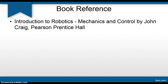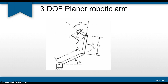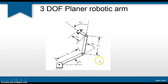Our reference book will be Introduction to Robotics by John Craig. In this session we will solve a particular example where we have a three degree of freedom robot which is moving in a plane only, so you can consider the screen is a plane in which these three links will be moving.